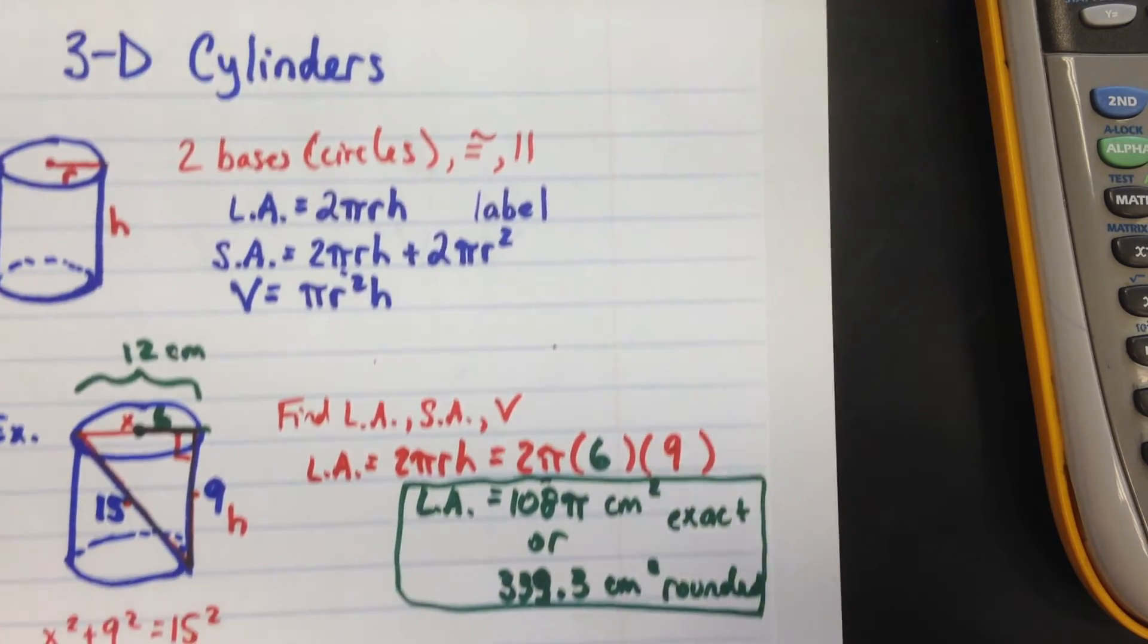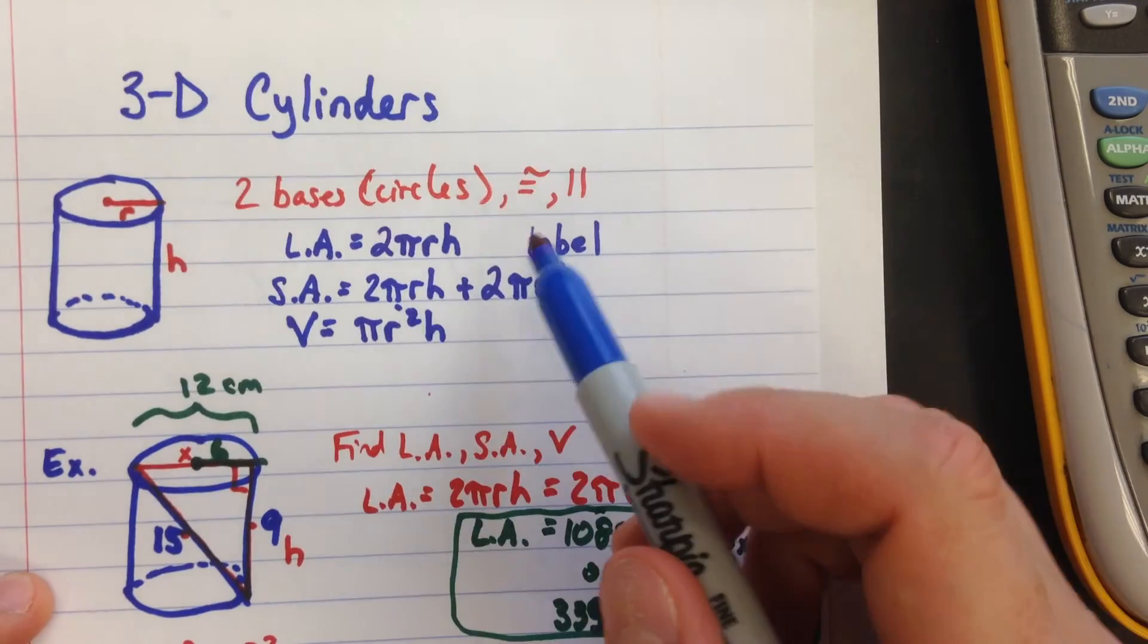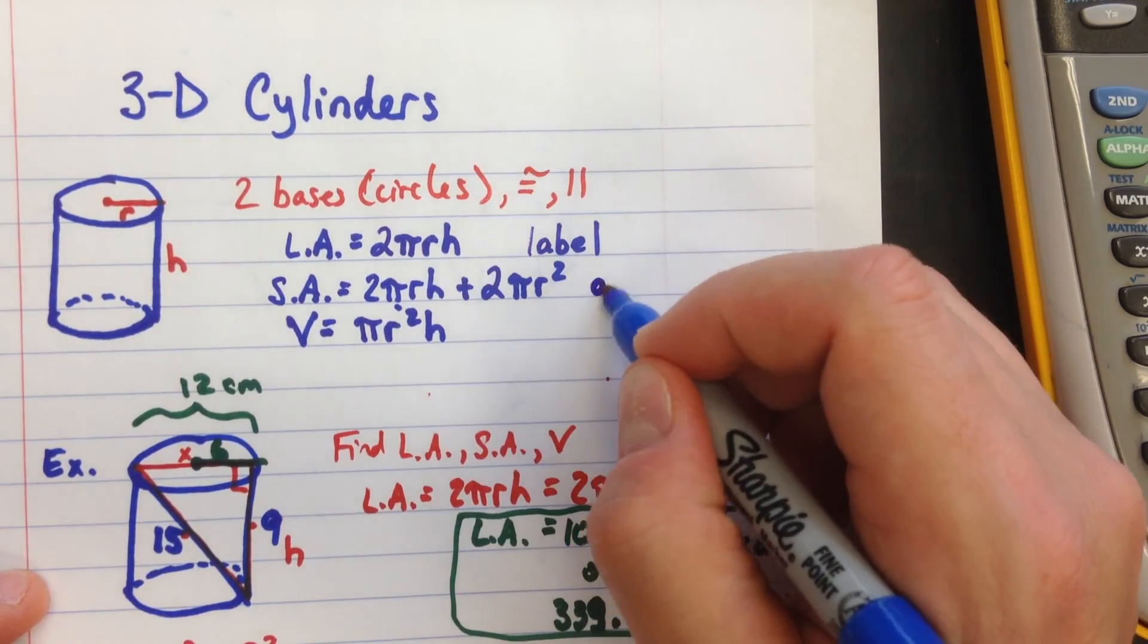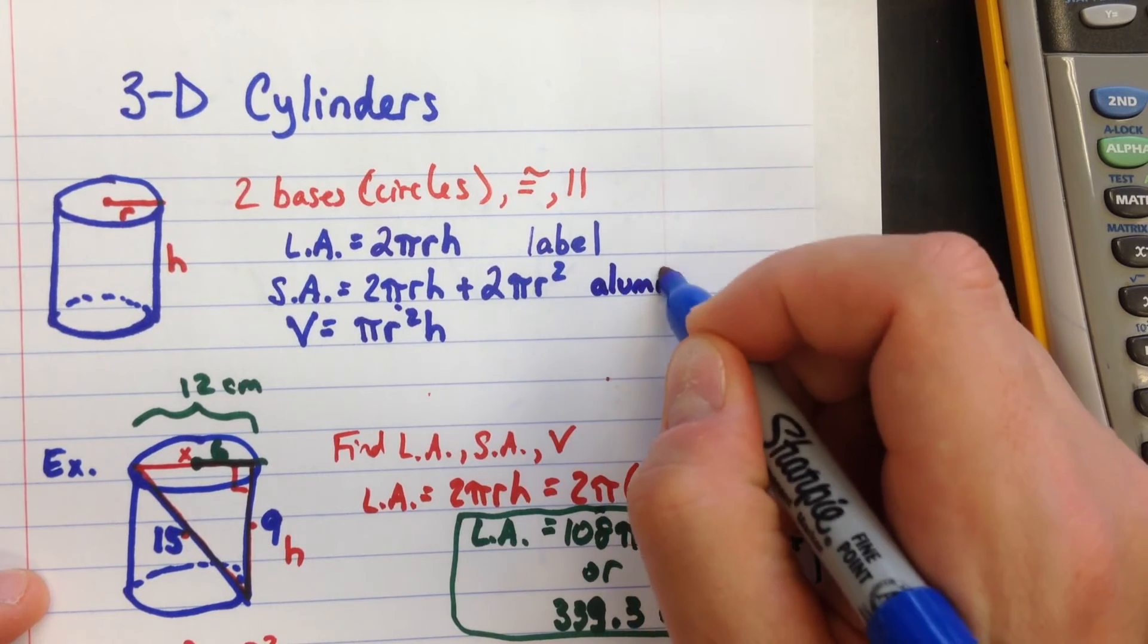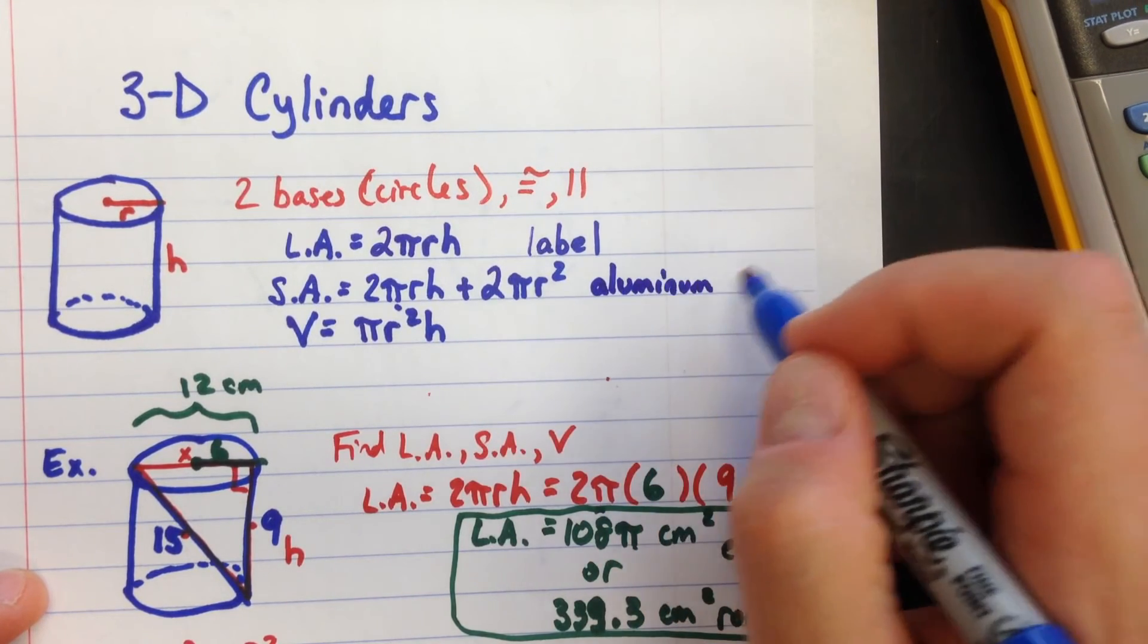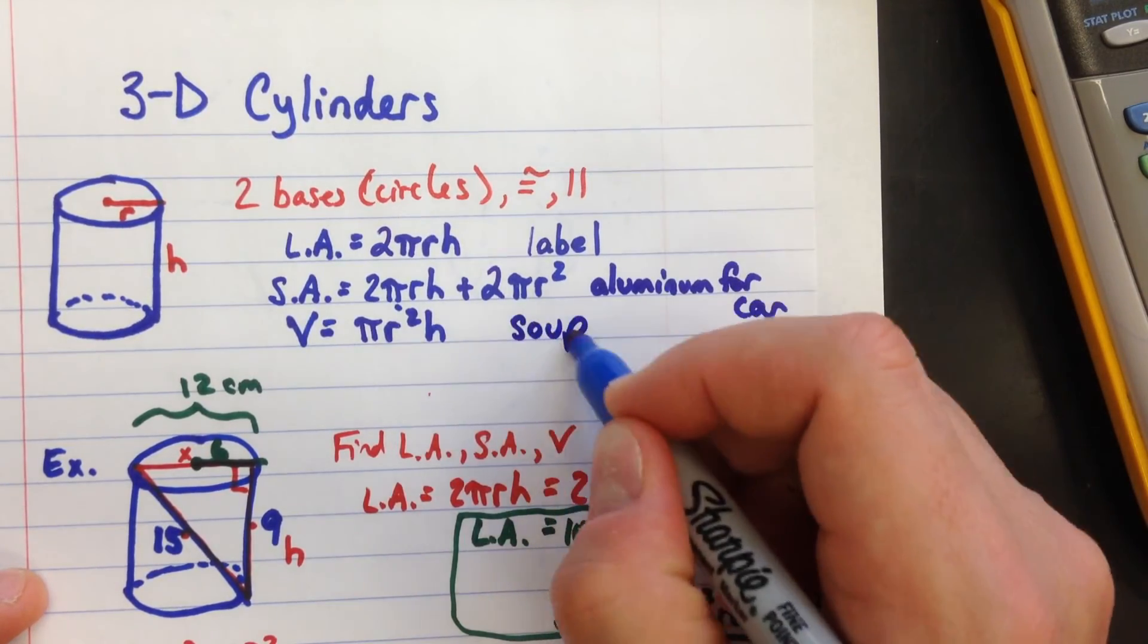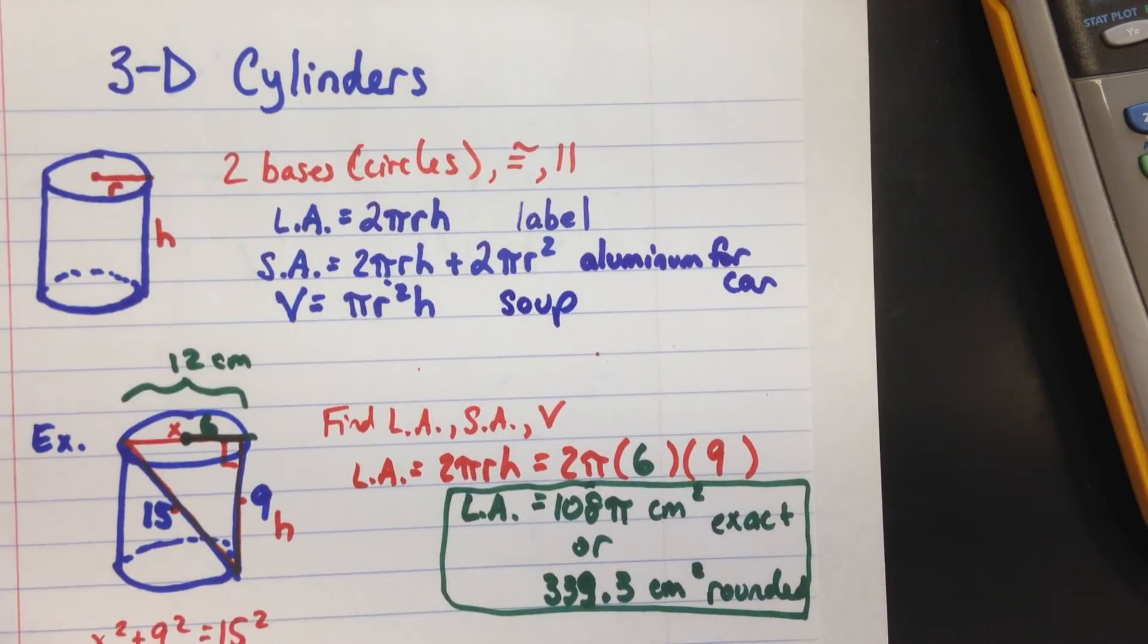Just going back to the front here: lateral area, that's kind of like the label on a can. Surface area would be the aluminum, the can itself, the metal for the can. And then the volume, the space inside, that would be your soup. So you can think about it that way.